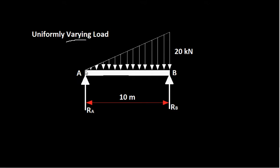The load is varying from 0 at point A to 20 at point B — this is a uniformly varying load. As in the previous cases, we can calculate the total load of this force system and convert it to a point load. The total load will be the area of this triangle, and that total load will act as a point load at the center of gravity of this triangle. So you need to know how to find the area and center of gravity of a triangle.